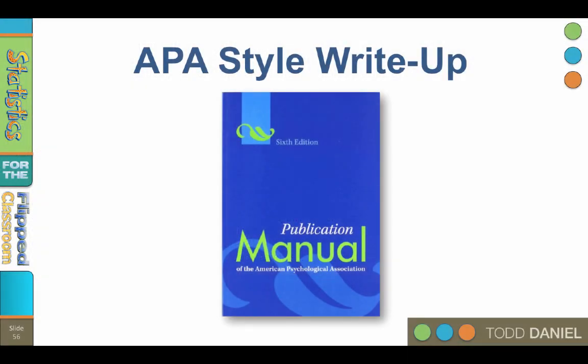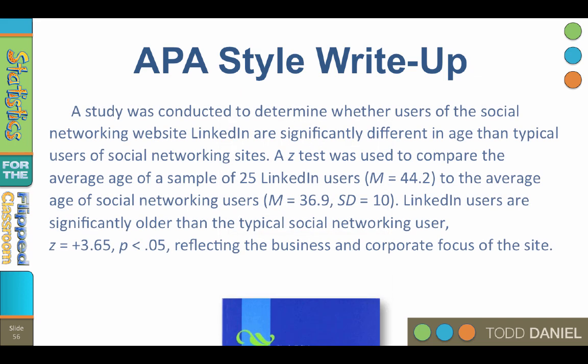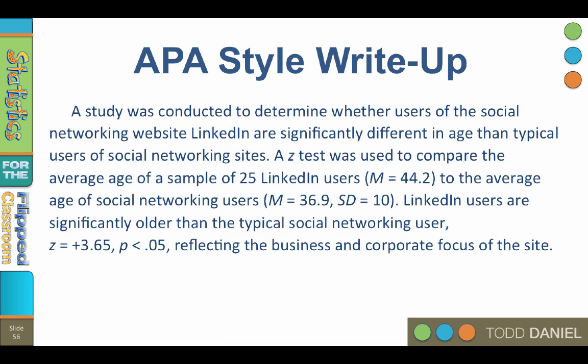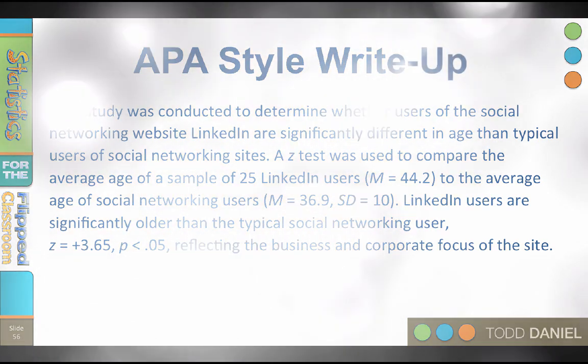Once we have calculated the z-test in SPSS, we need to write it up in APA style 6th edition. Here is an example of how we might do this. I read through this example in the previous video, so I won't read through it again, but you can pause the video if you need to.